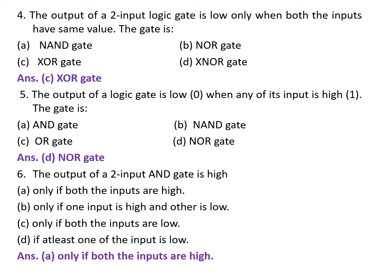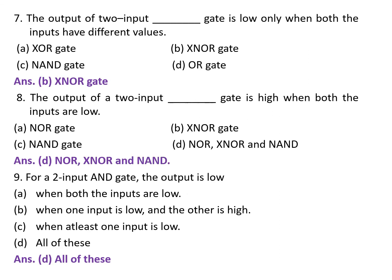That is, only if both the inputs are high. Next question: the output of which 2-input gate is low only when both the inputs have different values? A. XOR gate. B. XNOR gate. C. NAND gate. D. OR gate. The correct answer is B — XNOR gate.